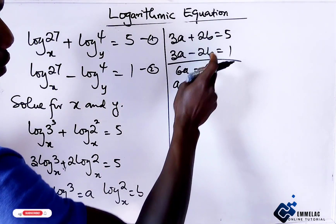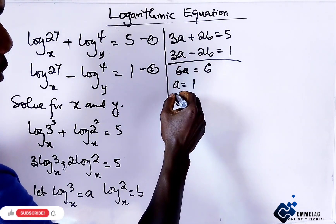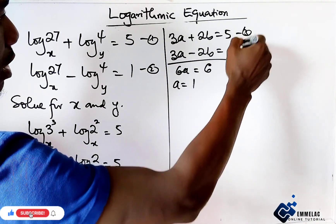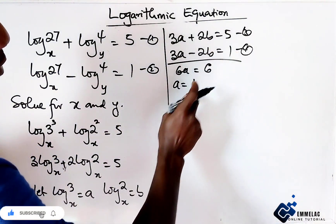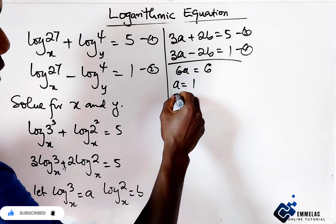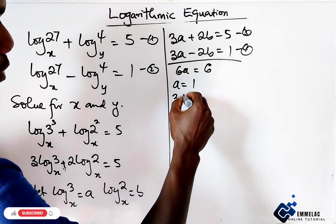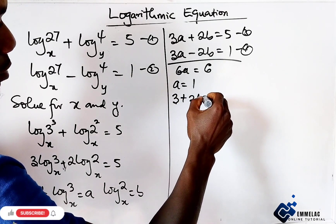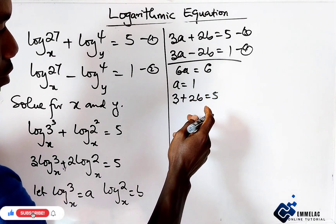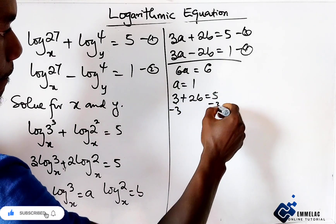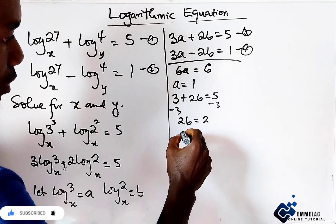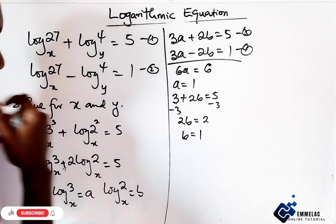Plug in a equals 1 into this equation. Let's call this equation 3 and that equation 4. Plugging a equals 1 into equation 3, we have 3 plus 2b equals 5. Subtracting 3 from both sides, we get 2b equals 2, so b equals 1 when we divide by 2.